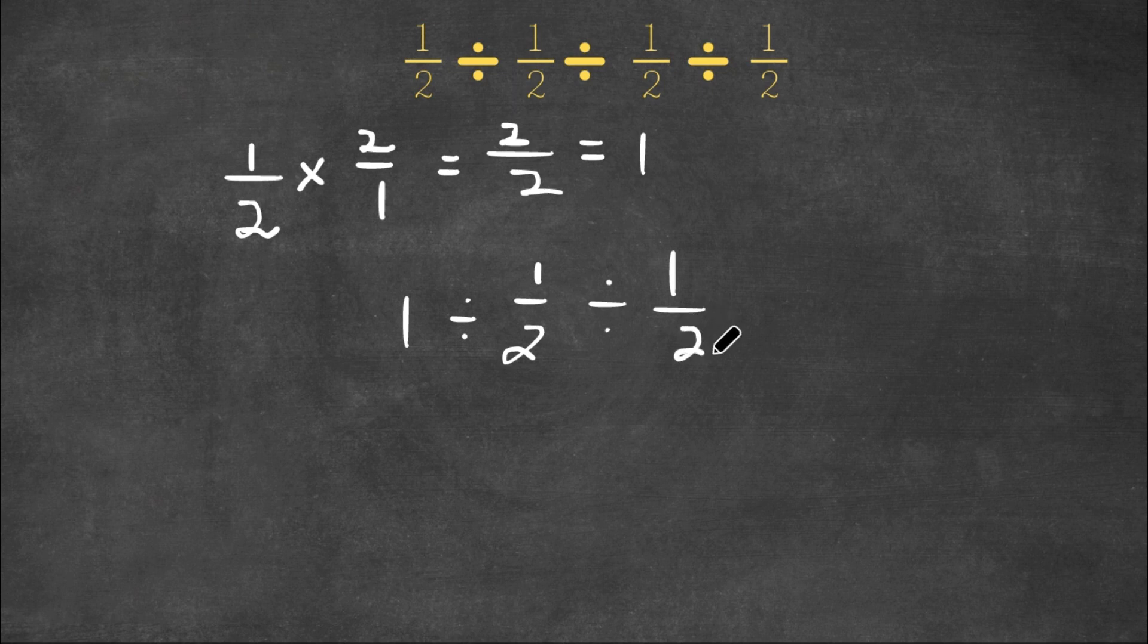And remember, we have to go in order. According to PEMDAS, we have to do what's first because everything is division. So now we have to do 1 divided by 1 half.